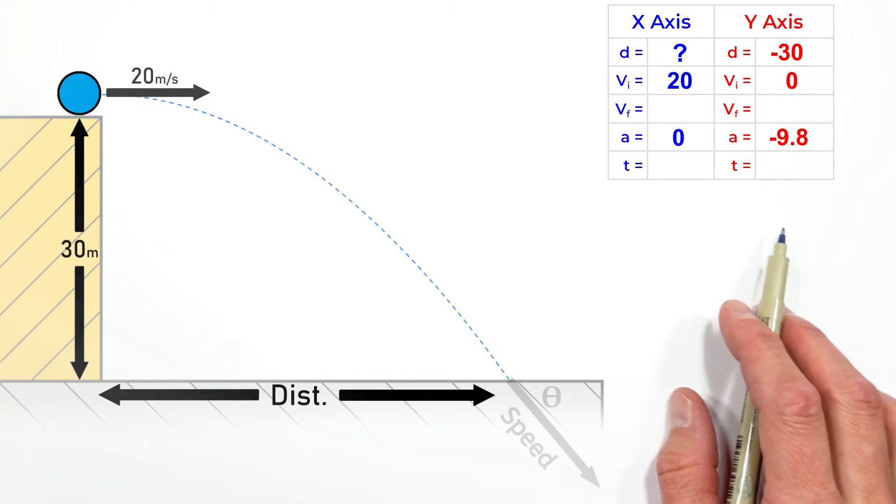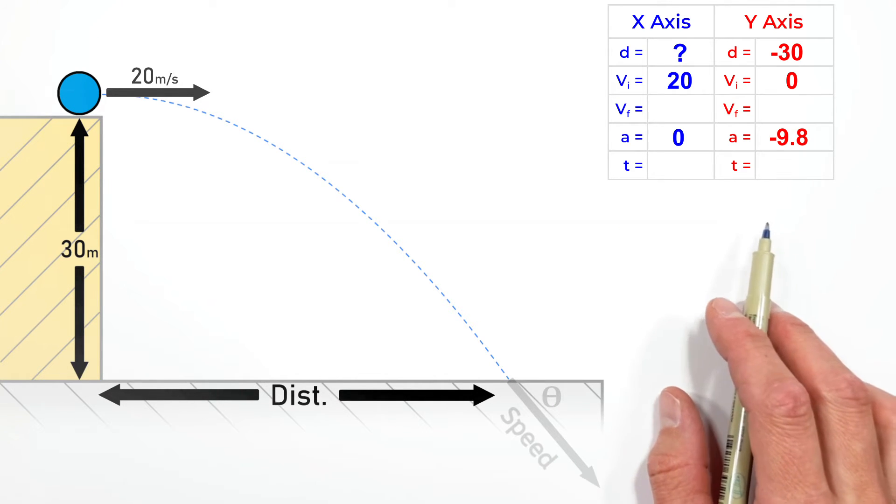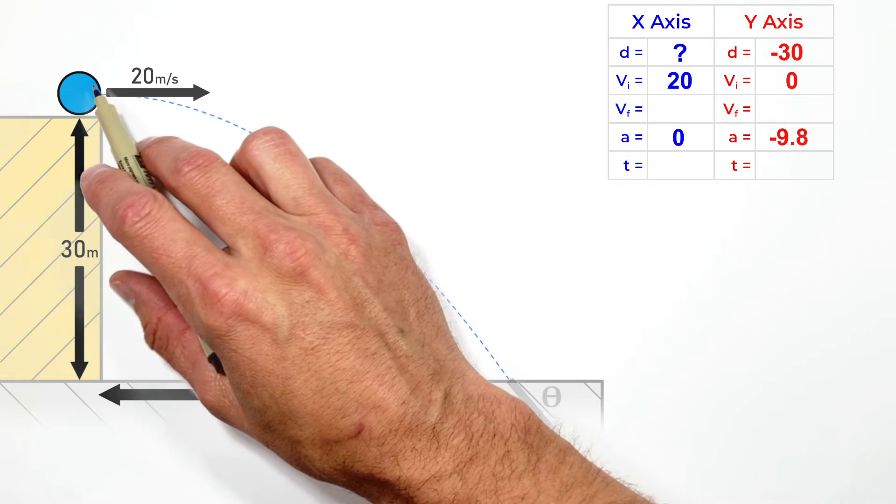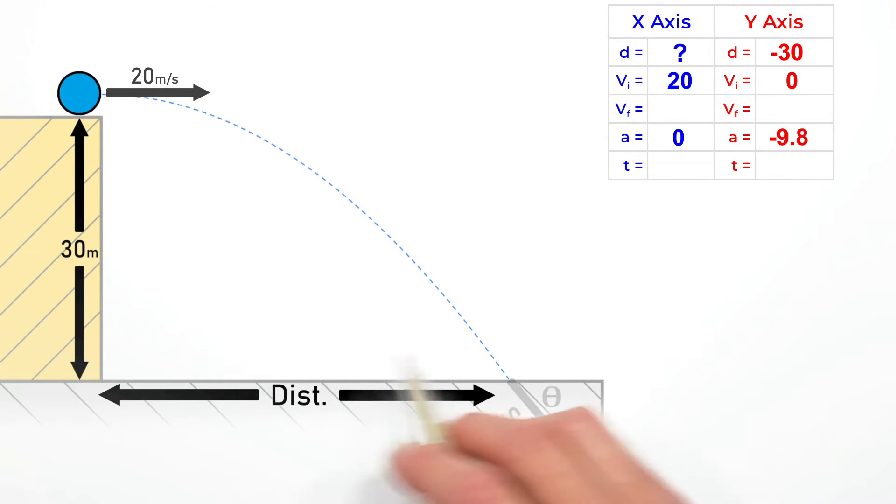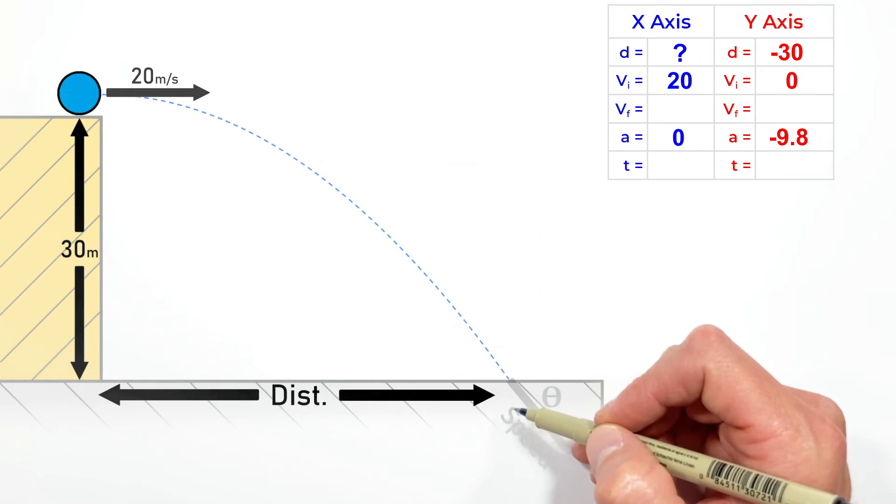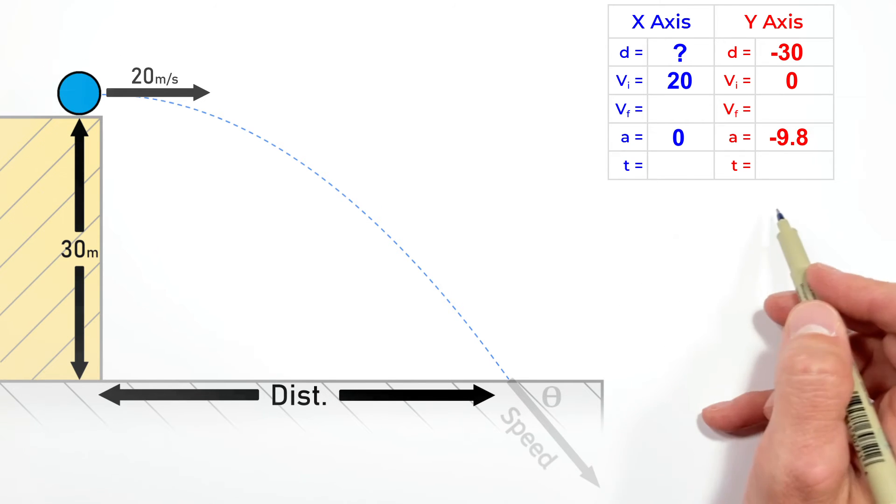The only thing these two axes of motion have in common is time. It's impossible for the ball to be moving horizontally through the air longer than it's moving vertically, so time couples these two things together.